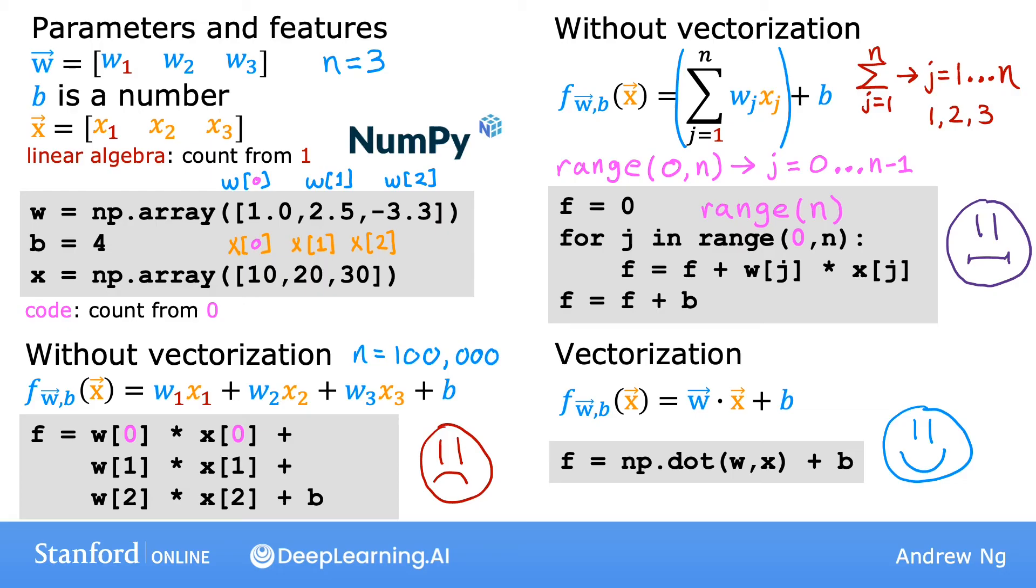I want to emphasize that vectorization actually has two distinct benefits. First, it makes the code shorter - it's now just one line of code, isn't that cool? And second, it also results in your code running much faster than either of the two previous implementations that did not use vectorization. And the reason that the vectorized implementation is much faster is behind the scenes, the numpy dot function is able to use parallel hardware in your computer. And this is true whether you're running this on a normal computer, that is on a normal computer CPU, or if you are using a GPU, a graphics processor unit that's often used to accelerate machine learning jobs.